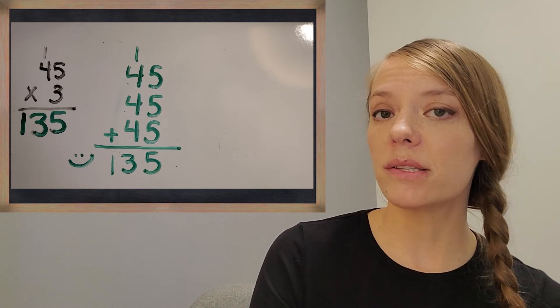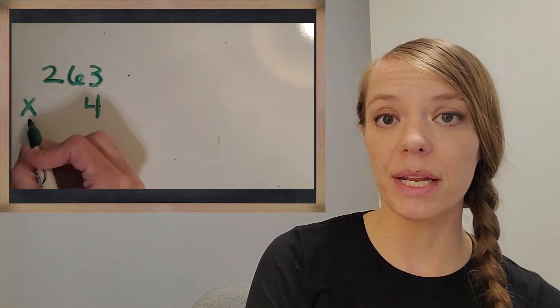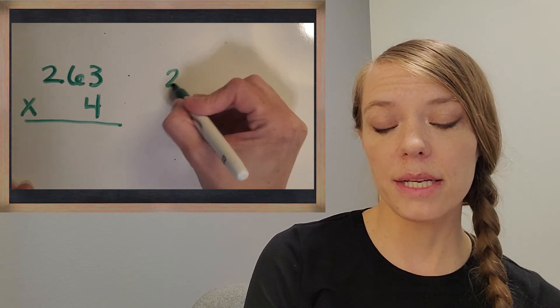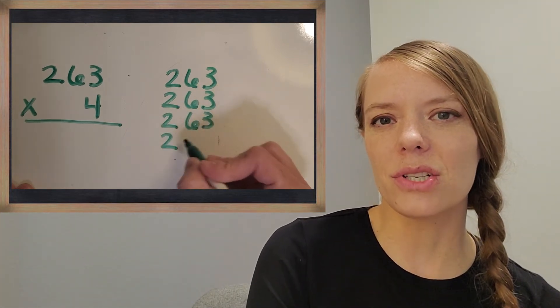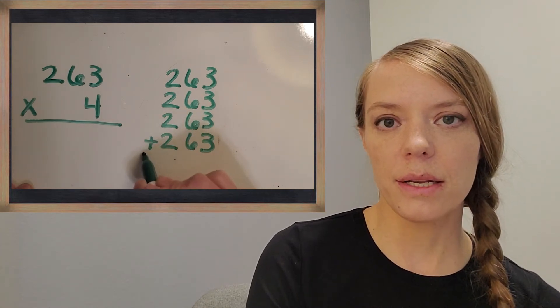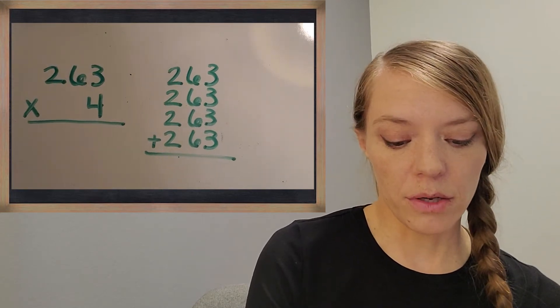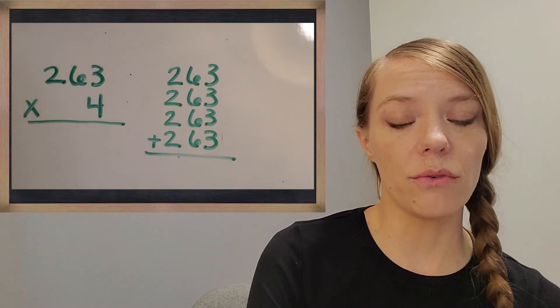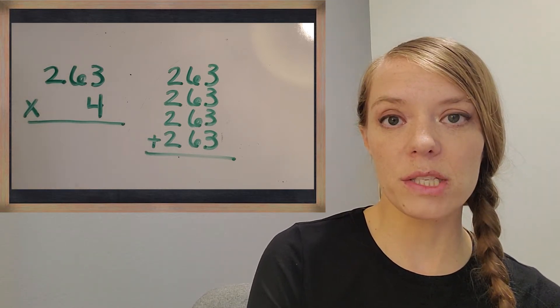Now let's do a problem that's a three-digit number times a one-digit number. We're going to try 263 times four. I'm going to write the algorithm on one side and the repeated addition on the other side. Anytime you're multiplying by a number like four, it's easy to do repeated addition alongside it, because this represents four groups of 263. Let's start with the lowest place value.